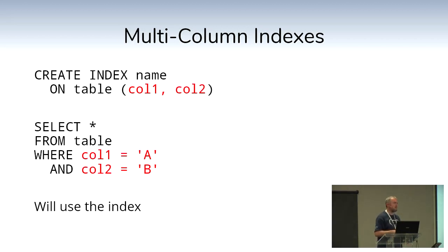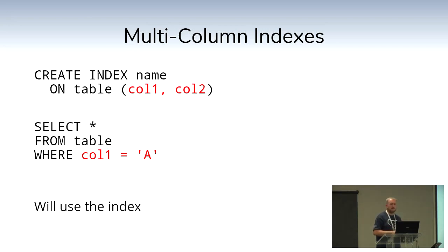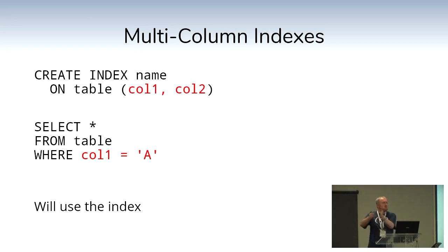A multi-column (compound/composite) index: CREATE INDEX name ON table (col1, col2). Internally the database simplistically concatenates the values together, so it's indexing one value sourced from multiple columns. To use it: SELECT * FROM table WHERE column1 = 'a' AND column2 = 'b'. You can still use it even if you're not specifying all indexed values — SELECT * FROM table WHERE column1 = 'a' will still use the index because it can search the concatenated value, similar to a LIKE 'a%'.